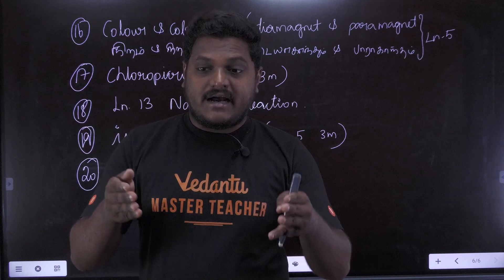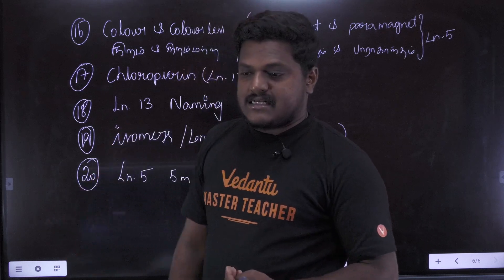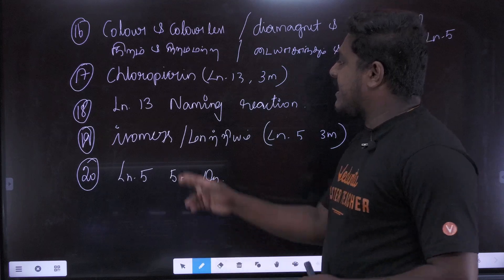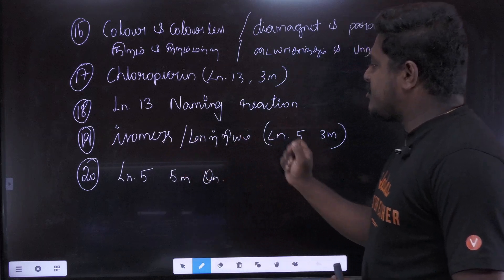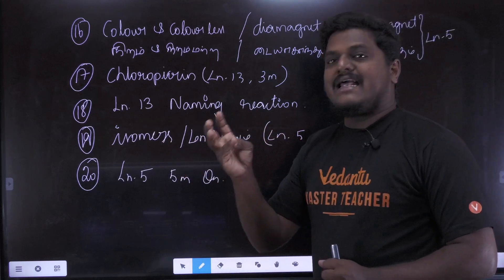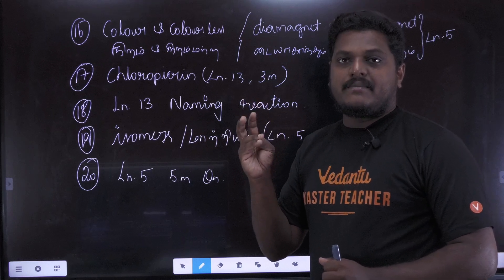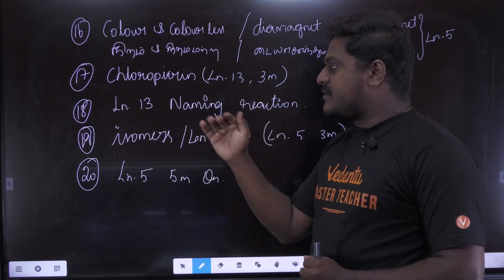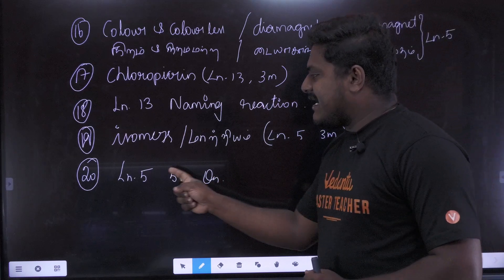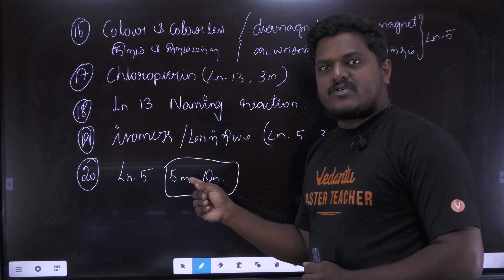It's easy to get into this channel. The 13th lesson is not going to be the toughest thing — it's the easiest thing. This covers isomers. Lesson 5. Linkage isomers. Solvate isomers — Lesson 5.